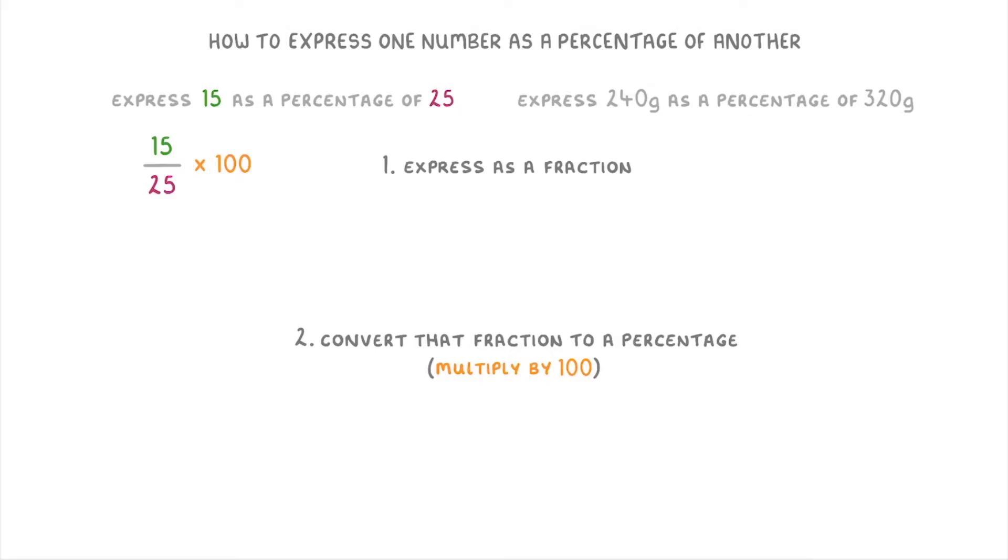If you can use a calculator, then you can just put this straight in and you'll get your answer. Otherwise, you probably want to simplify it down a bit. So you can simplify the 15 over 25 to 3 fifths, so that we get 3 fifths times 100, and then you multiply the 3 by 100 to get 300 over 5, which is 60. So our final answer is 60%.